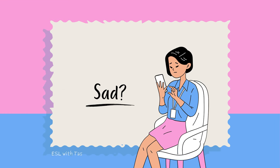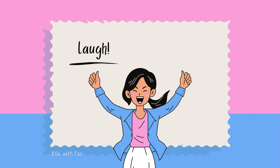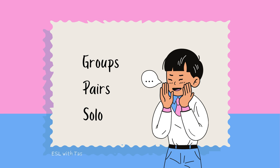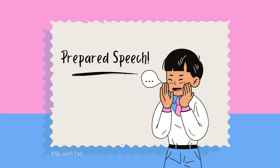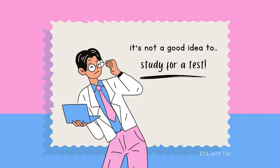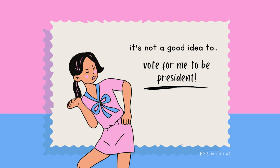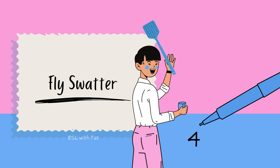Now we've got None of the Above. This is my go-to activity for when I'm feeling sad because it always makes me laugh out loud. I ask students to take turns — whether as groups, pairs, or individuals — to give a prepared speech where they try to convince the rest of the class that it's not a good idea to do something. I pick the most ridiculous arguments, like 'it's not a good idea to study for a test' or 'it's not a good idea to vote for me to be president.'